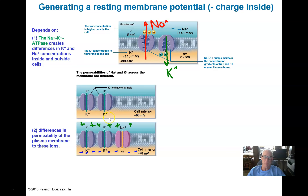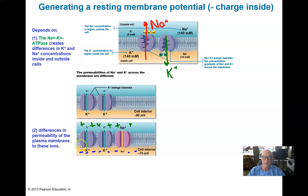At rest, the membrane is more permeable to potassium than to sodium. These little channels represent pathways by which potassium can leak out of the membrane at rest because of the huge concentration difference. A few sodiums can leak in, but not nearly as many because there are not as many pathways. So the net effect is positive charges leaking out of the cell, leaving behind a net negative charge — a resting membrane potential of around minus 70 millivolts.